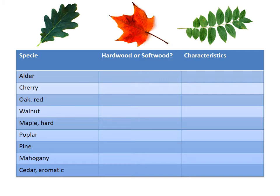Here is a list of species, and I want to know whether it's a hardwood or softwood and some of its characteristics. First, alder — it is a hardwood because it loses its leaves. Alder is kind of a pale brown, and we have a sample of alder up in our classroom.